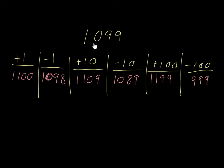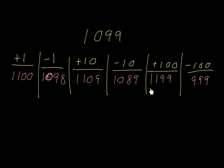1,099 add 1 should take you to 1,100 because 99 add 1 is going to be 100, so it'll be 1,100. 1,099 subtract 1 is 1,098. 1,099 plus 10 is going to give you 1,109. 1,099 subtract 10 is going to give you 1,089. If you add 100, it's going to be 1,199. And if you subtract 100, it will be 999. I hope those answers were the same ones that you got. If not, you can try watching the video again, and if that still doesn't help, you can try Khan Academy — perhaps they have a video that might help you some more.